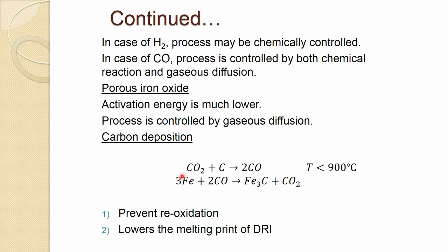Carbon deposition occurs at around 900°C — the Boudouard reaction — as discussed in the context of the blast furnace. Sometimes cementite (iron carbide) is also formed, which in direct reduction is beneficial: it slightly reduces the melting point, and it prevents or reduces reoxidation of iron by forming iron carbide. This also increases the carbon percentage in the product, prevents reoxidation, and lowers the melting point of DRI when this reaction occurs.